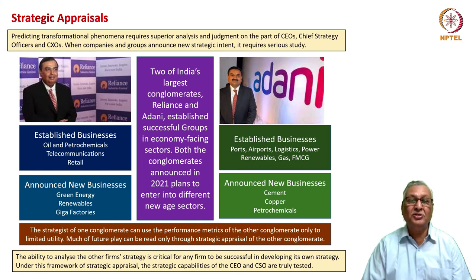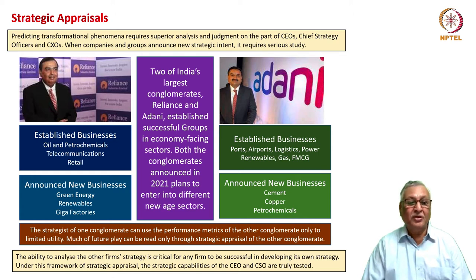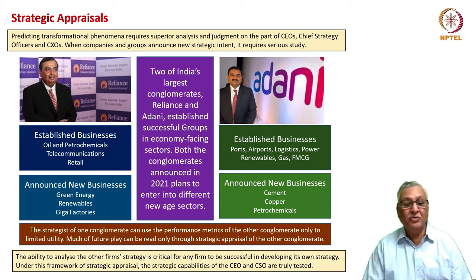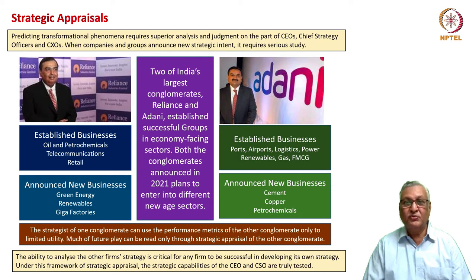Consider two of India's largest conglomerates: Reliance of Mukesh Ambani and Adani of Gautam Adani. Both announced in 2021 plans to enter new sectors. For Reliance, established businesses include oil and petrochemicals, telecommunications, and retail, with new businesses in green energy and renewables. Adani's established businesses span ports, airports, logistics, power, renewables, and gas, with new businesses in cement, copper, petrochemicals, and aluminium. The strategist of one conglomerate can use the performance metrics of the other only to limited utility — much of the future play can only be read through strategic appraisal.